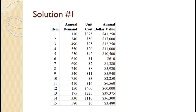The first step is to calculate the total annual cost value for each item by multiplying its estimated annual demand times the unit cost. For item number one, annual demand of 110 times the unit cost of $375 equals $41,250.